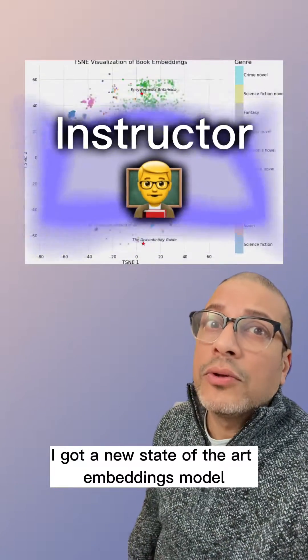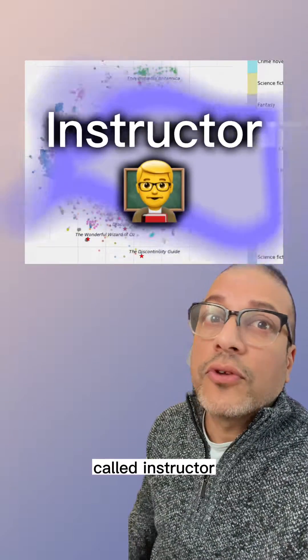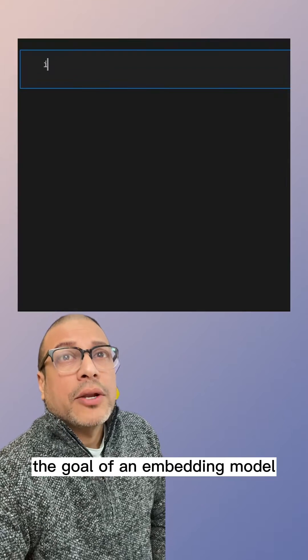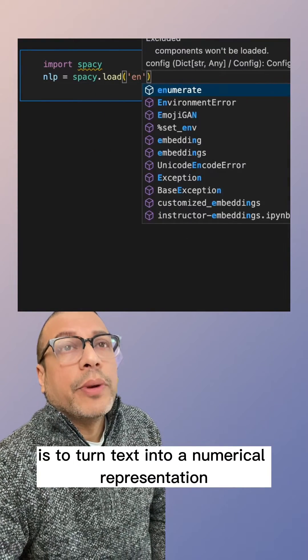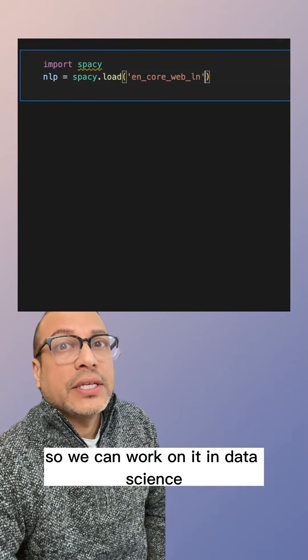I got a new state-of-the-art embeddings model that the folks from Meta just dropped called Instructor. The goal of an embedding model is to turn text into a numerical representation so we can work on it in data science.